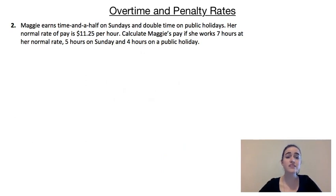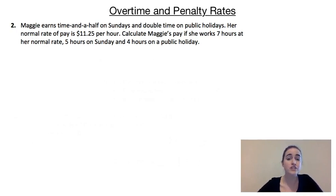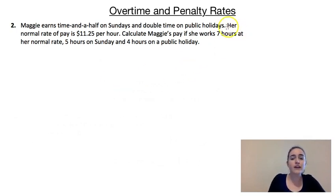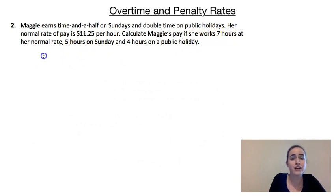Our second example tells us that Maggie earns time and a half on Sundays, and double time if she works on public holidays. Her normal hourly rate of pay is $11.25 per hour. We're asked to calculate Maggie's pay if she works seven hours during the week at her normal rate, five hours on a Sunday, and four hours on a public holiday. For the seven normal hours, we calculate 7 × $11.25.